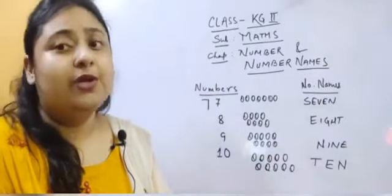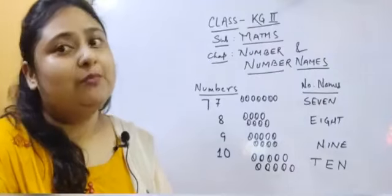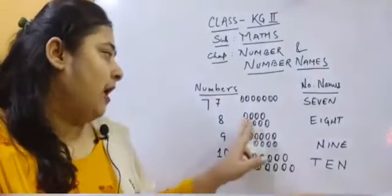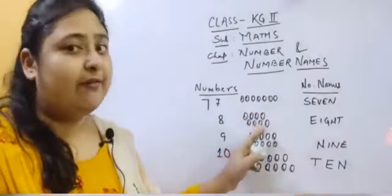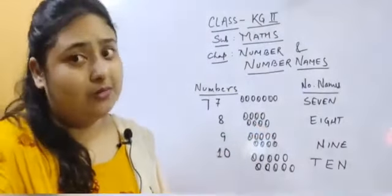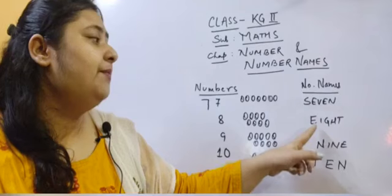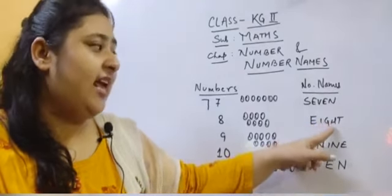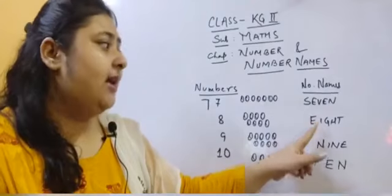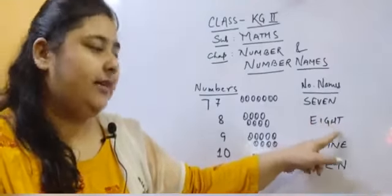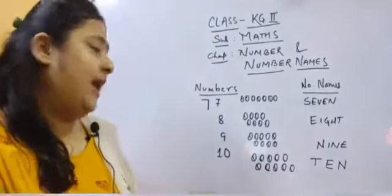Now let's move on to number 8. Number 8 is one more than number 7. Let's count the balls together: one, two, three, four, five, six, seven, eight. There are 8 balls. How do we say number 8? Let's spell it together: E-I-G-H-T. Let's say it once more: E-I-G-H-T. How do we write number 8? We write number 8 like this.